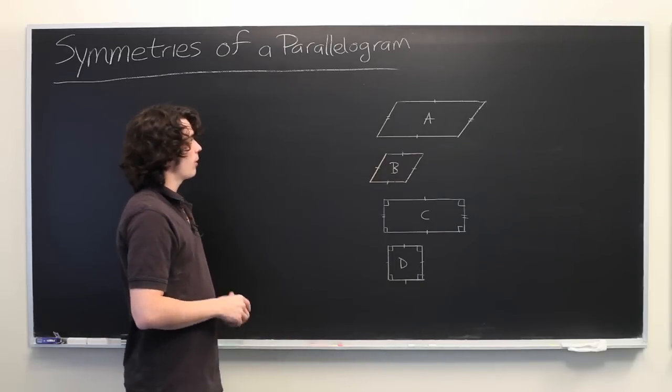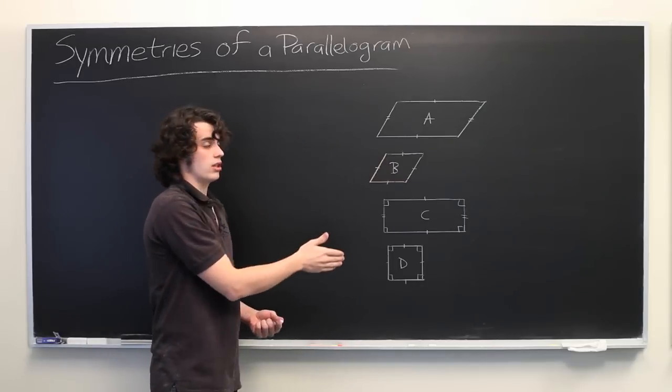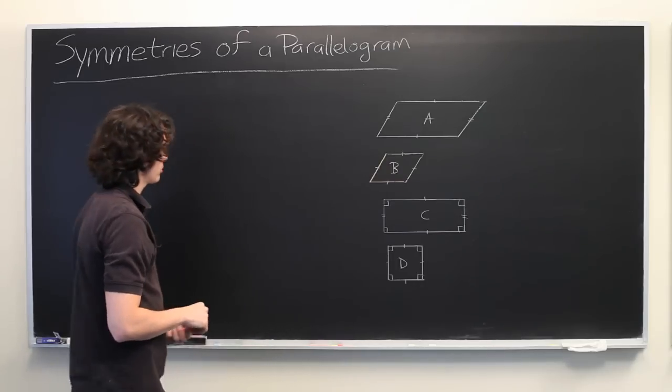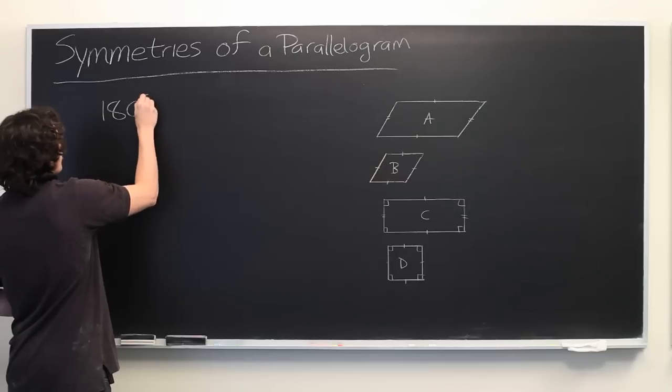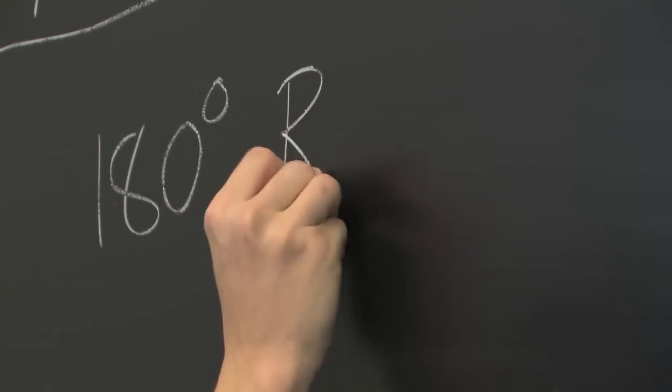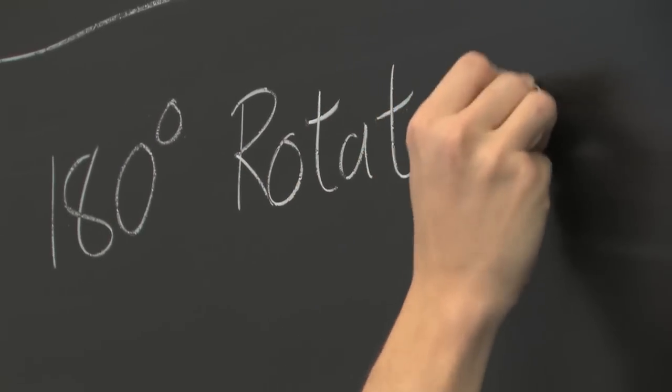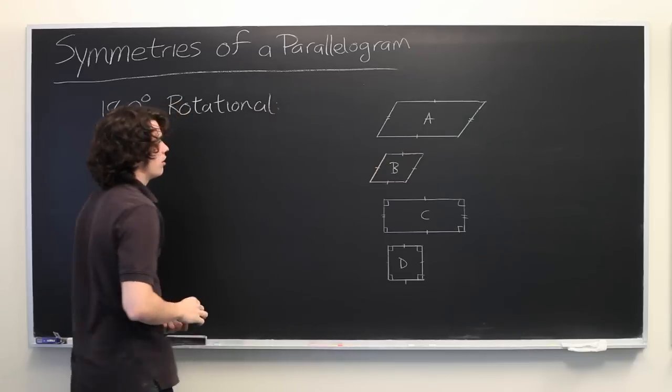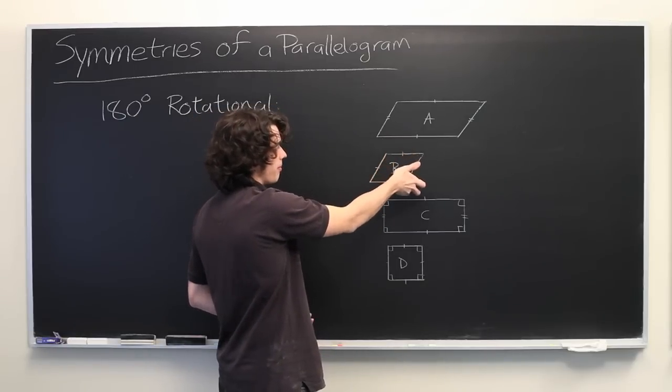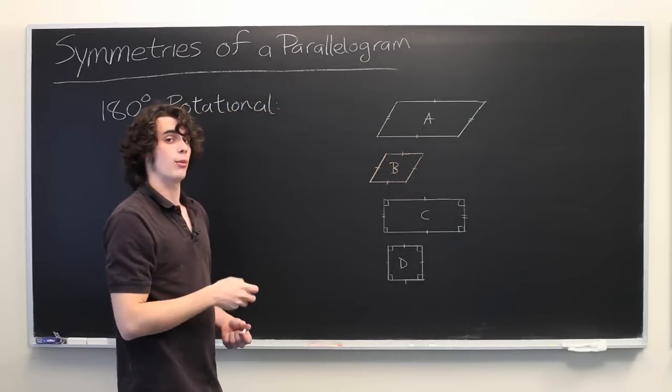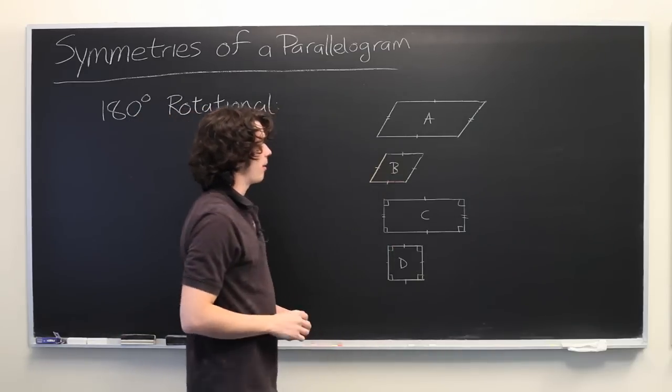So let's talk about the different types of symmetries that a parallelogram can have and figure out which one of these has those properties. So the most common is 180 degrees rotational symmetry. This means that you can take the shape, rotate it 180 degrees, and get the same shape back again in the same orientation. And in fact, all of these parallelograms have that property.